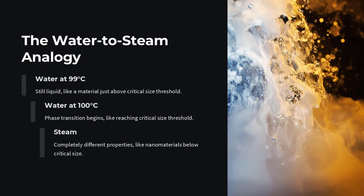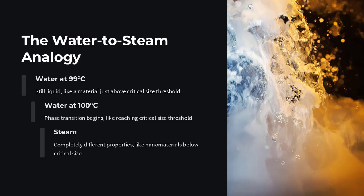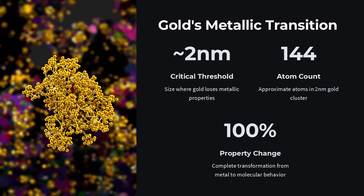Iron oxide particles below ~20nm lose stable ferromagnetism and become superparamagnetic. Even the melting point of tin drops by hundreds of degrees when particles shrink below ~10nm.